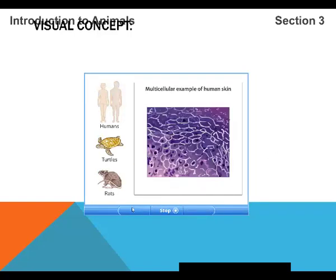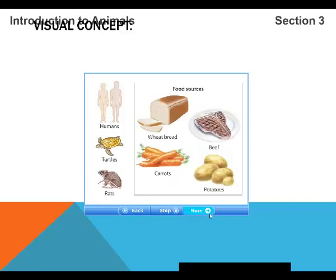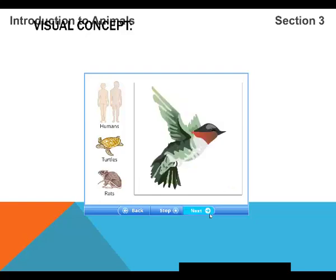Most animals are multicellular organisms that lack cell walls. Unlike plants, animals cannot make their own food — they must seek out food sources in their environment. Most animals can move in many different ways in search of food, shelter, or mates.